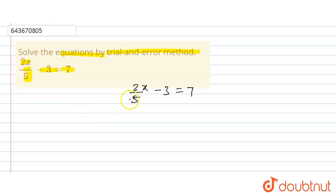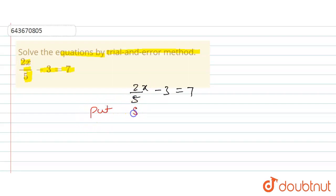In the denominator of this term there is a five, so for reducing this five we will put the value of x as a multiple of five. So here we will put first x is equal to five.